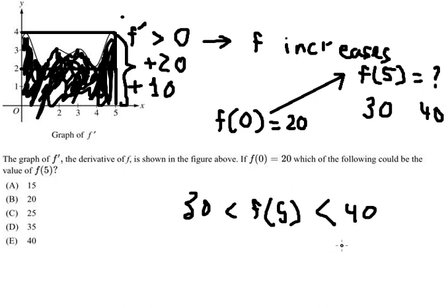So f of five should be between 30 and 40, which means we have only answer D.